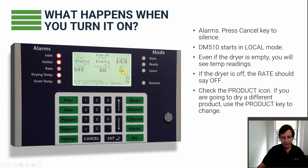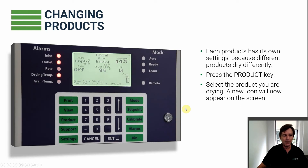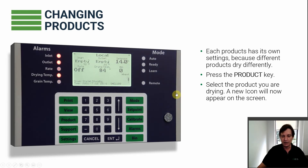The product icon on screen — here it's corn. Every product in Dryer Master is set up with a different set of parameters and a different model, so it's important you use the right product when drying. To change products, just hit the Product key, a selection comes up, and you scroll down or push the number for it. In this case we scroll to wheat and hit Enter. Always make sure you've got the right product selected.